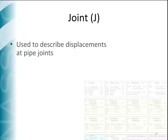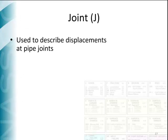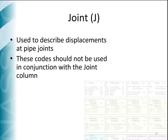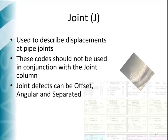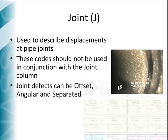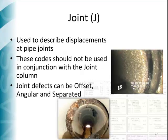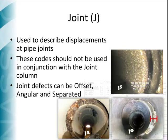The joint group of codes is represented by the letter J and is used to record abnormal displacements at pipe joints. The joint group has three different codes: JA, JS, and JO, for angular, separated, and offset, which should not be used in conjunction with the joint column in the details section of the CCTV form.